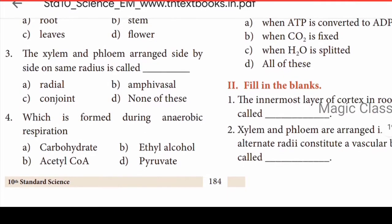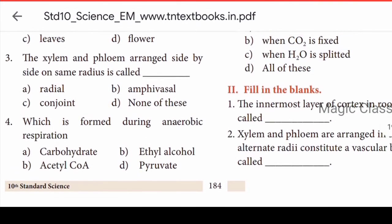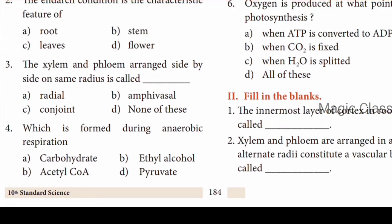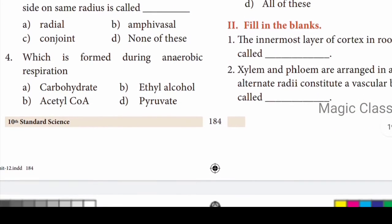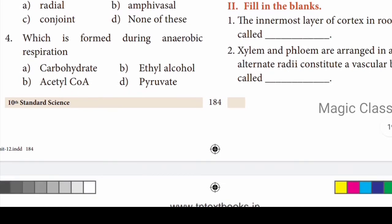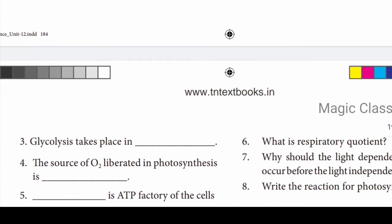Now fill in the blanks. The innermost layer of the cortex is called dash. Answer: Endodermis — the innermost layer of the cortex is endodermis. Second question: xylem and phloem arranged in alternate radii constitute a vascular bundle called — Radial vascular bundle. When they are on the same radius it is conjoint; when alternate, it is radial.